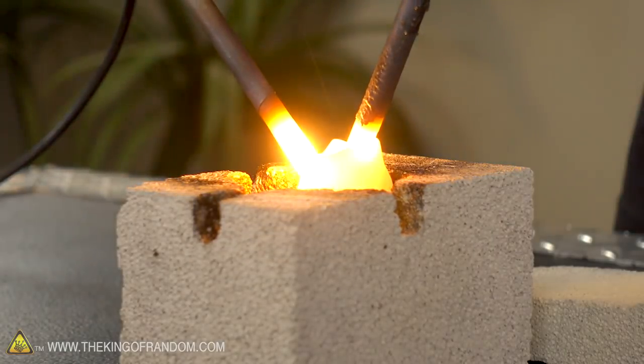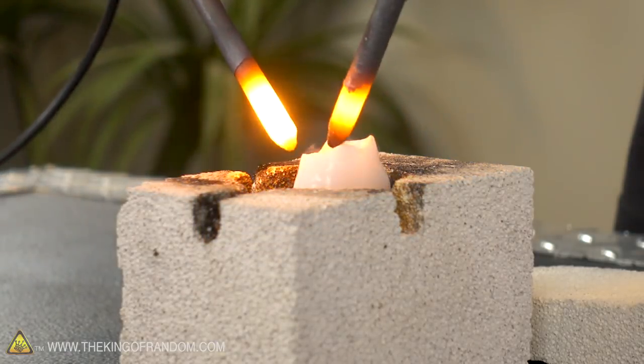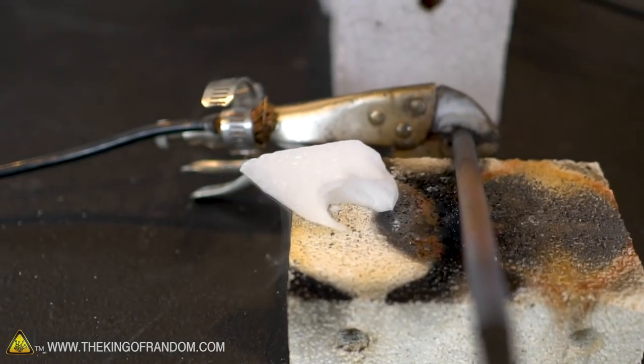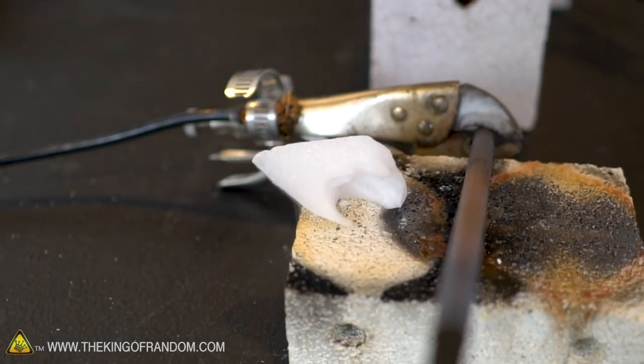So by taking the rods, arcing them together, heating them up, and then physically touching them against the dry ice, that's when we start really seeing the dry ice get carved away quickly. That might be the fastest I've ever seen anything carved through dry ice.